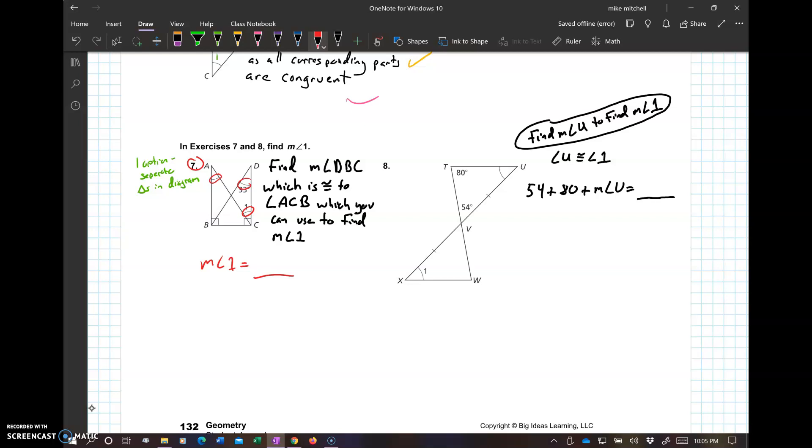Here you got to find measure of angle 1. Find the measure of this angle. Gave you a little hint right there. And you got it. I guess I really didn't need that much video for this one. I thought number 7 was a much harder problem.